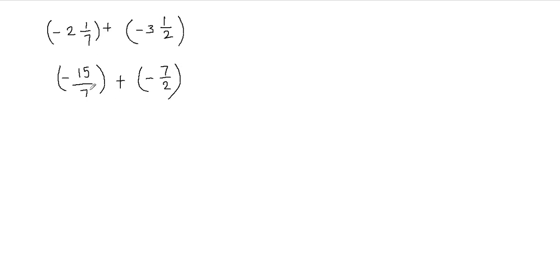So remember that you multiply the whole part with the fraction's denominator and then whatever you get you add that to the numerator. Now we're done converting these mixed fractions into improper fractions. Now we're going to take care of the parentheses. So this one is negative 15 over 7. We can remove the parentheses, and here if I remove the parentheses then I'll have two signs next to each other. Positive times negative — remember that positive times negative is negative. So if I remove the parentheses, I will have to put the negative sign and then we have 7 halves.